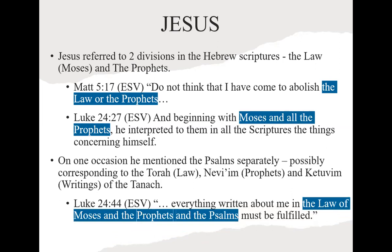Sometimes they'd add the Psalms, so there was a three-way division. Luke 24:44 says Jesus spoke of 'everything written about me in the law of Moses, the prophets, and the Psalms.' That three-part division has stuck — the Jewish Tanakh has the Law (Torah), the Prophets (Nevi'im), and the Writings (Ketuvim) — that's where the acronym 'Tanakh' comes from. When a Jewish person talks about the Tanakh, it's the same as what we call the Old Testament.